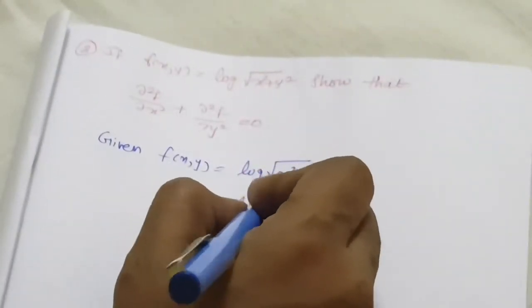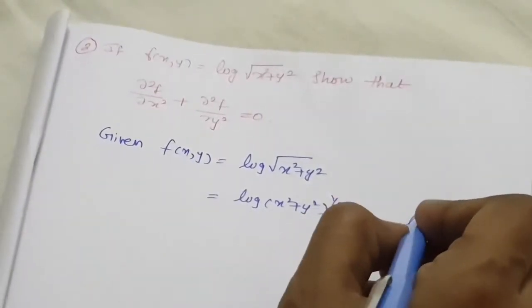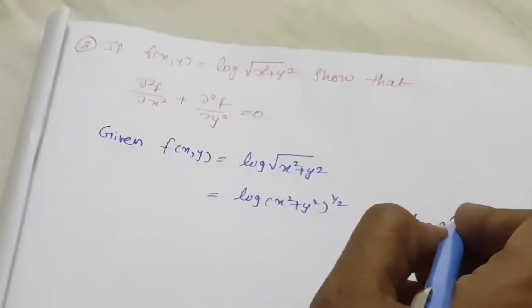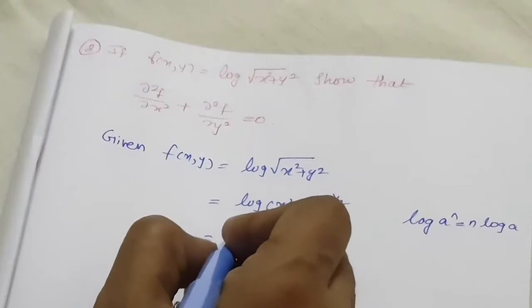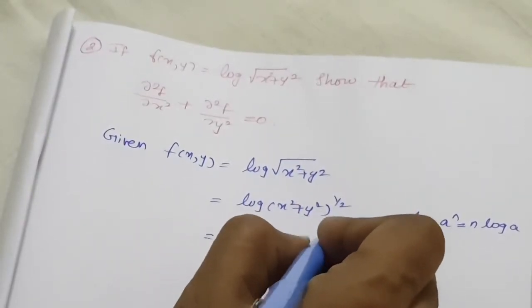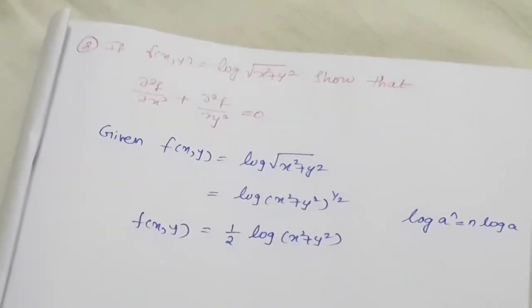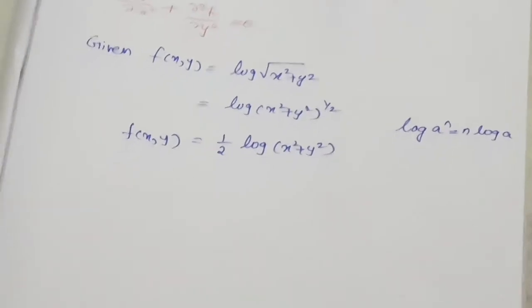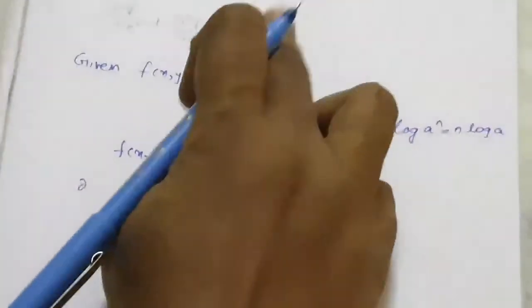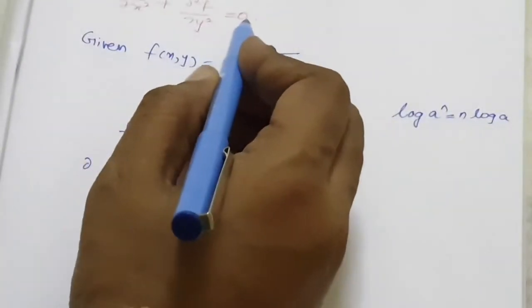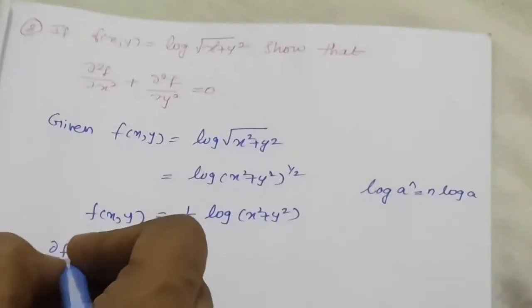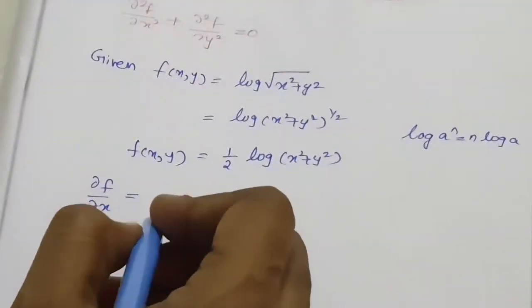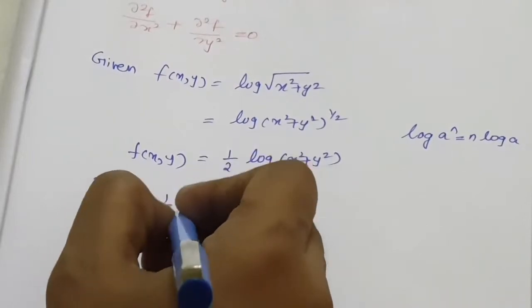We simplify: log of (x² + y²)^(1/2) equals (1/2) log(x² + y²), using the logarithm power rule log(a^n) = n·log(a). So f(x, y) equals (1/2) log(x² + y²). Now let us find the first step: ∂²f/∂x², by first finding ∂f/∂x.